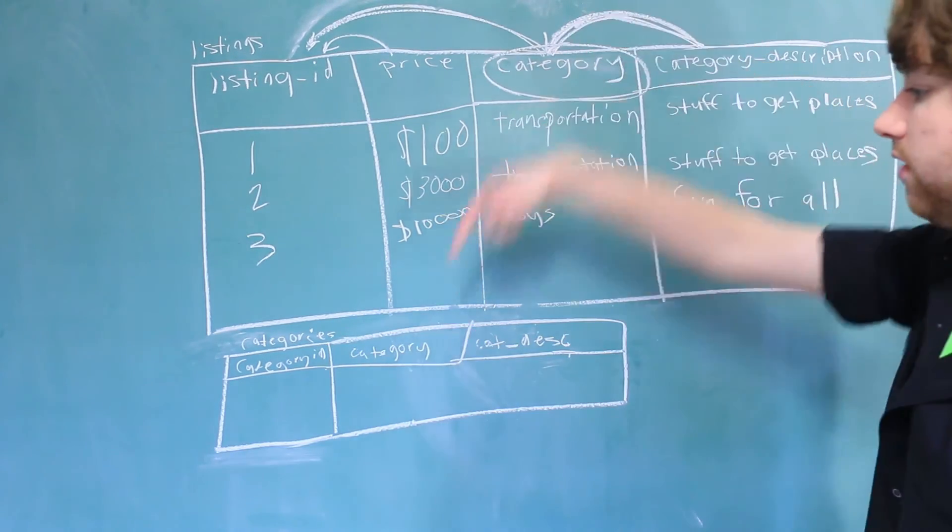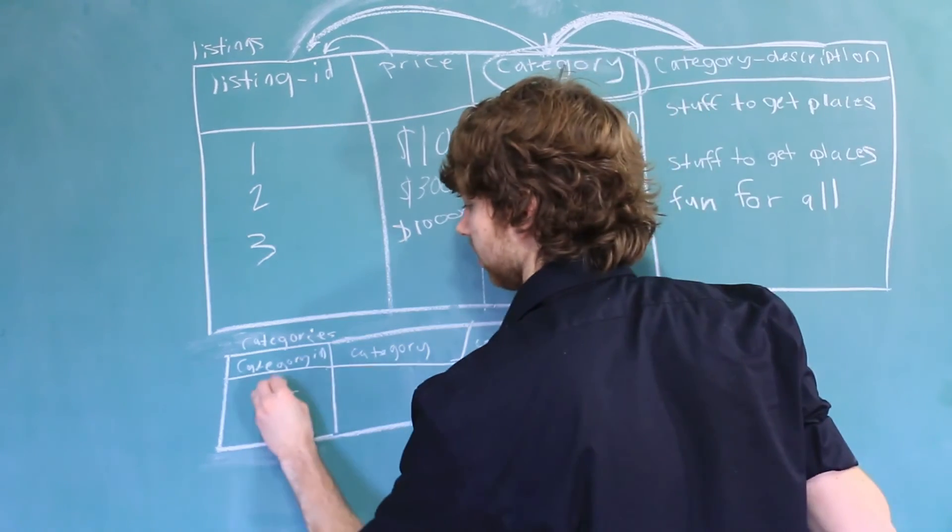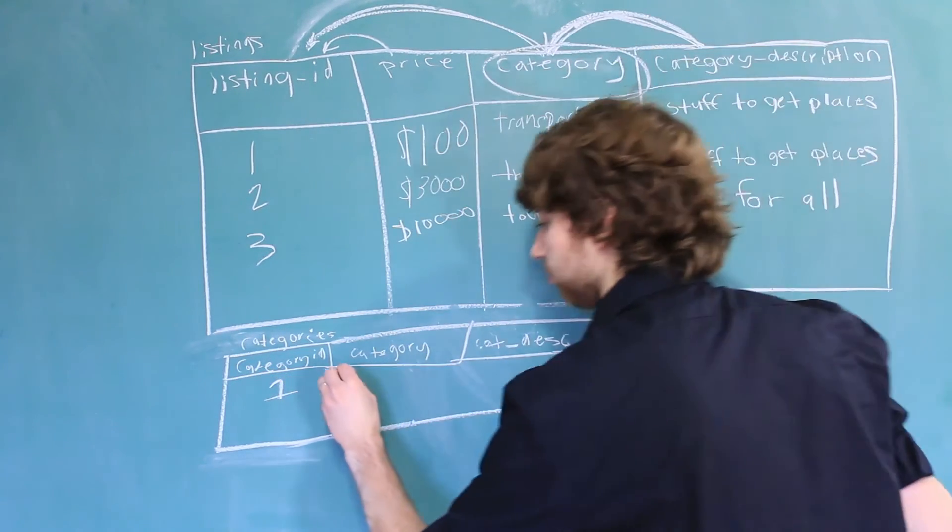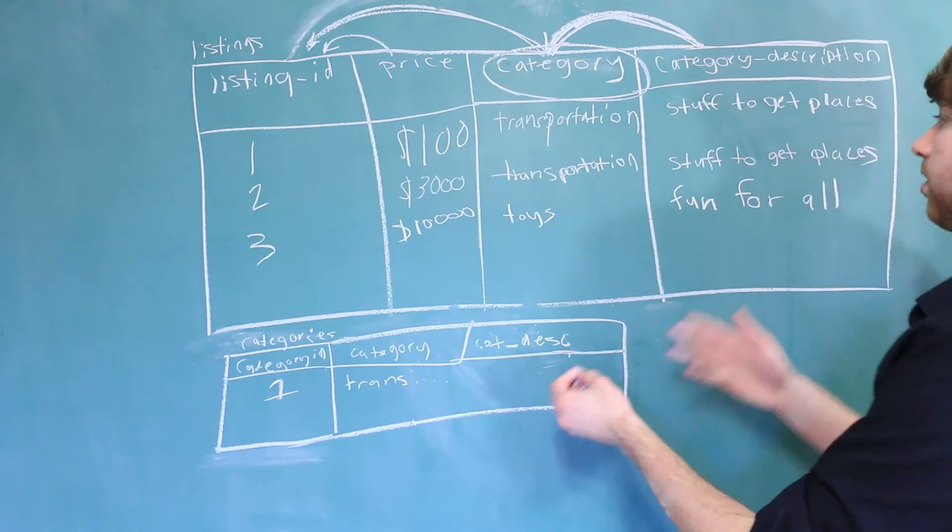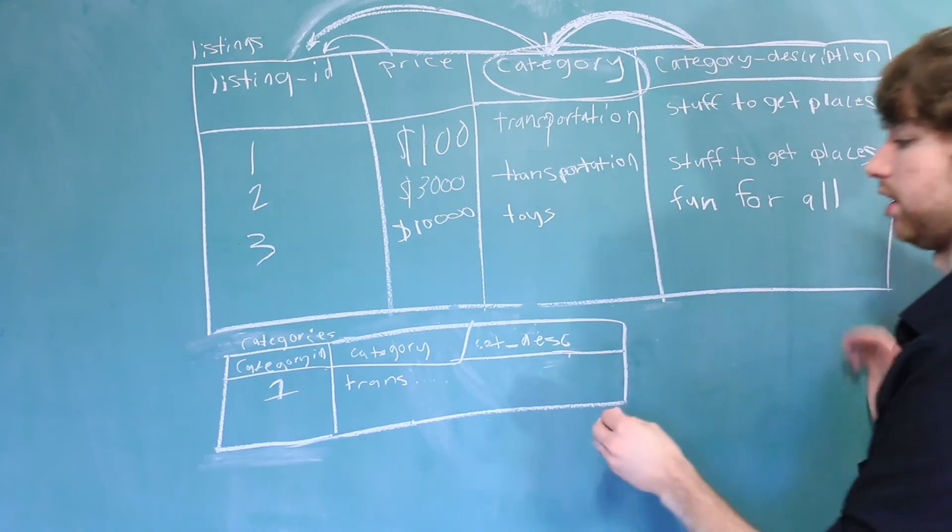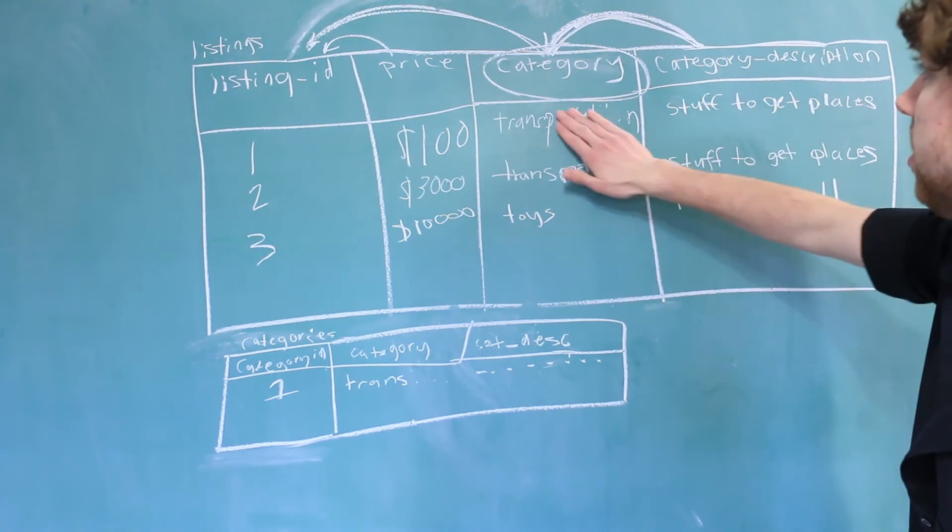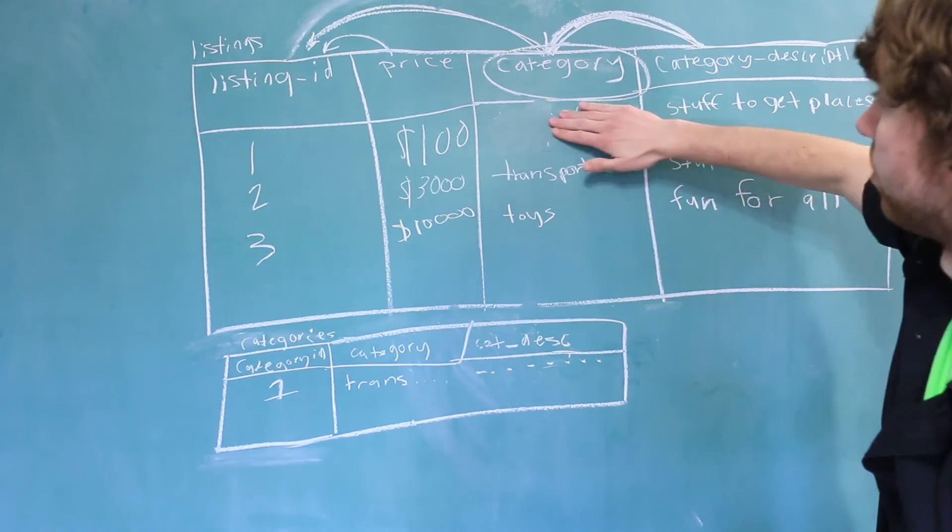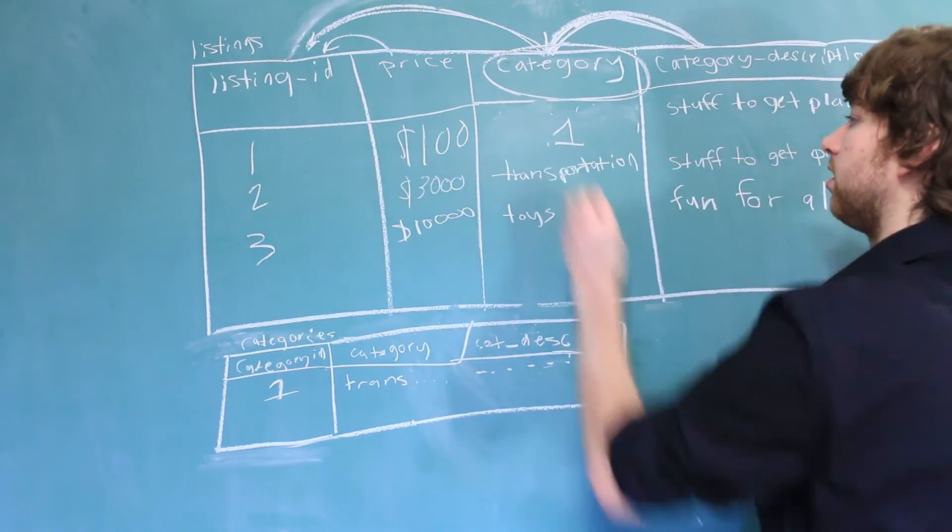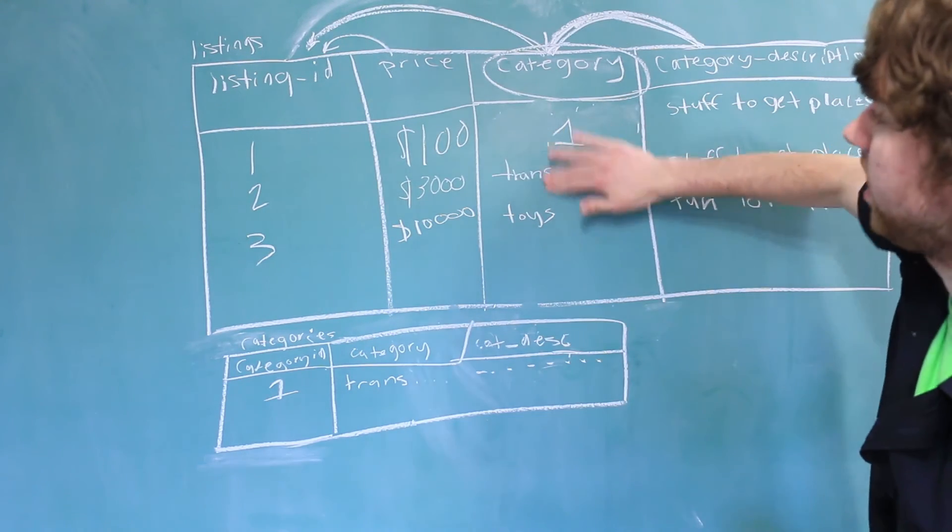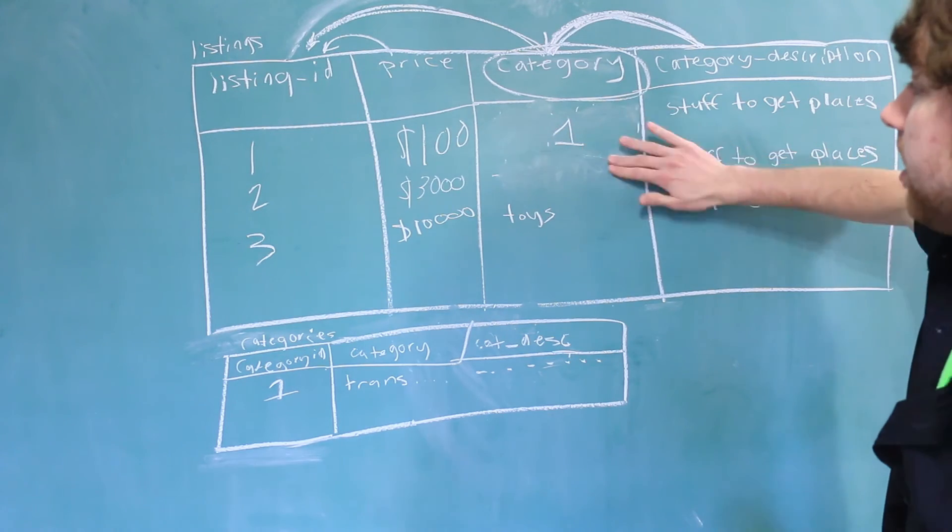Then we take this category and move it down here. So we could give it a category ID of one. And then the category would be transportation. And then the category description would be stuff to get places. And now you can replace this with a reference. So the category is going to be one. Same for this one. And you can see it reduces redundant data by adding another table.